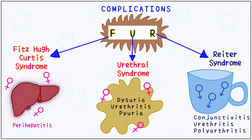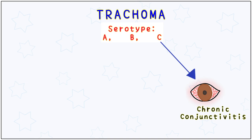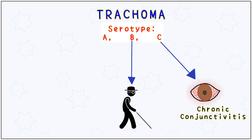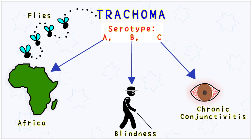Trachoma is another form of chlamydia infection. Its serotypes are A, B, and C, which will help you remember all its important features. C is for chronic conjunctivitis, where the follicles get infected, leading to in-turning of the eyelashes, which causes corneal scarring. Repeated damage to the cornea leads to B for blindness. Trachoma is the leading cause of preventable infectious blindness. This condition is mostly found in A for Africa. This disease is sometimes spread by flies and is also called swimming pool conjunctivitis.